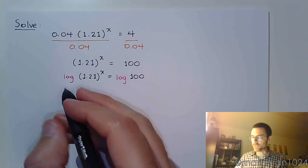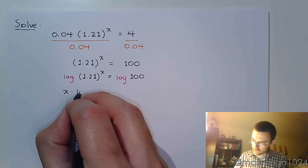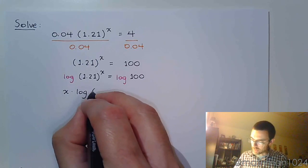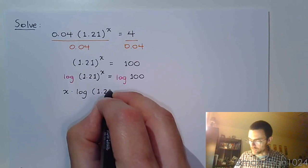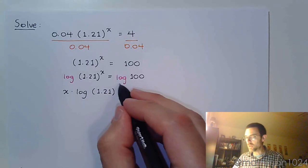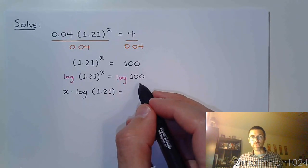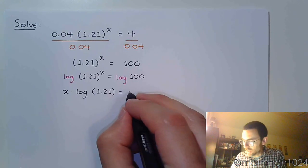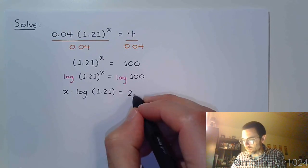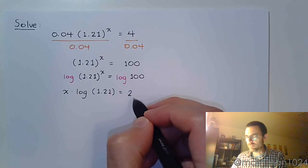So again, the power comes out in front. So this is x times the log of 1.21. Over here, the log of 100, we've gone over this, right? The log of 100 is going to be 2. What's the power of 10 that gives you 100? It's just 2.